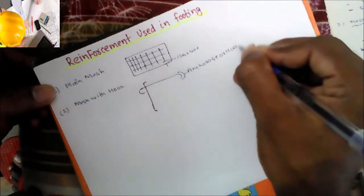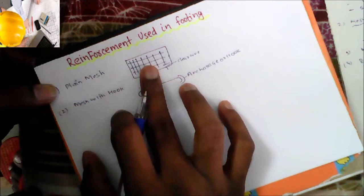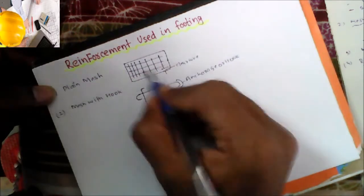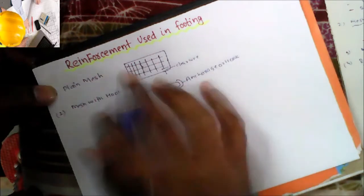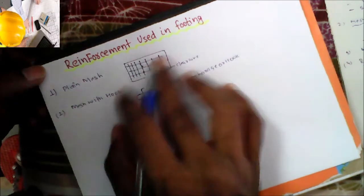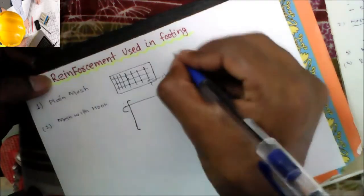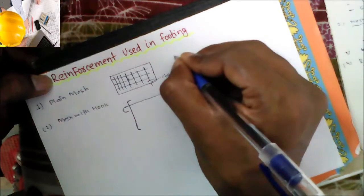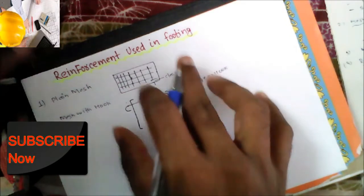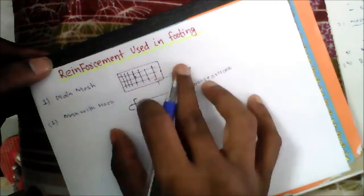Plain mesh is generally provided in isolated footing and combined footing. The spacing may be different or equal in both directions. The type of mesh is selected depending upon the loading — how much load is acting on the mesh and the foundation receives. According to that, the type of mesh is decided by the structural engineer.